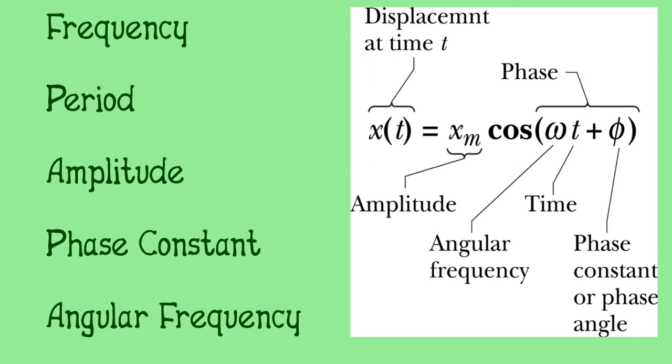Amplitude is expressed by x_m in our equation, and it simply means the maximum position of our object that is experiencing simple harmonic motion. You get this amplitude, or maximum displacement, when your cosine function is equal to one.